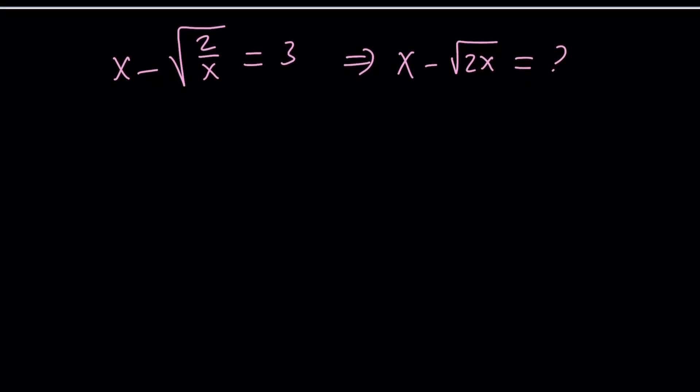So let's go ahead and take a look at this problem and see how we can approach it. We have x minus the square root of 2 over x equals 3, and we're supposed to evaluate x minus the square root of 2x. How do we find the values of x from the first equation? You just solve it. You can go ahead and put x and 3 on the same side, and then square both sides. That should give you the value of x, but how many values you're going to get? Looks like we're going to get a cubic equation with three roots.